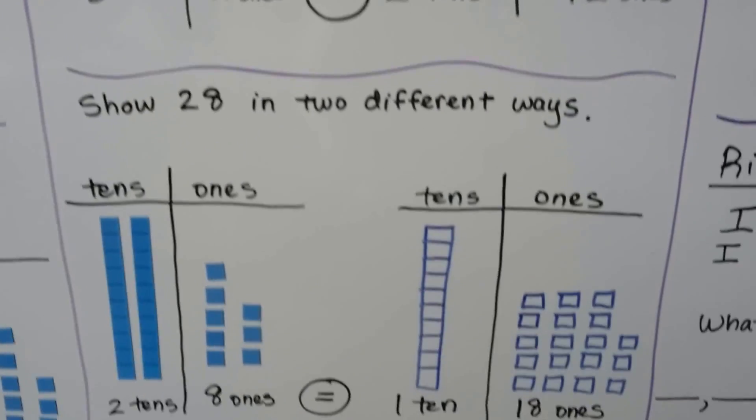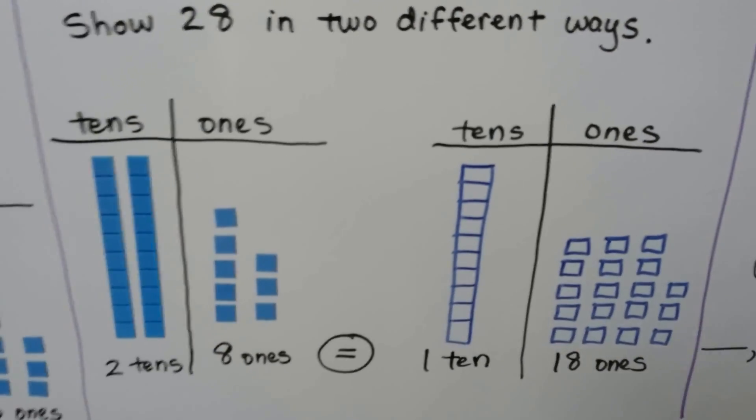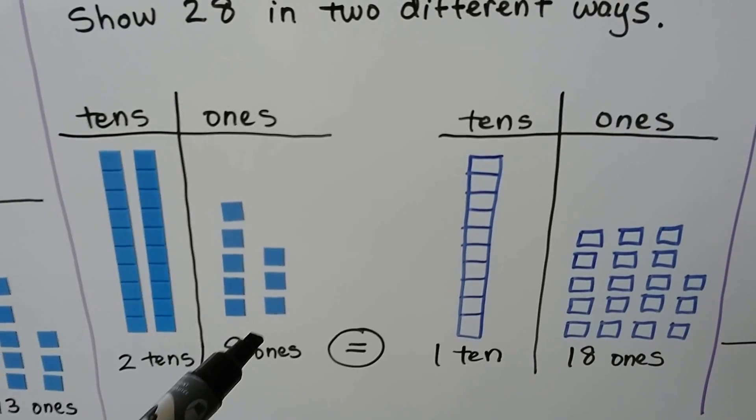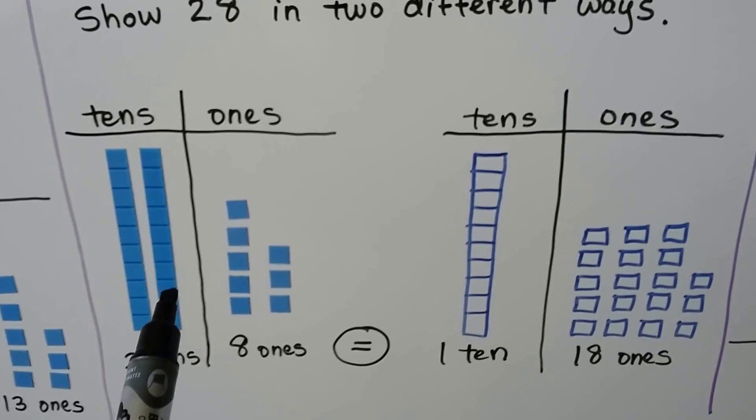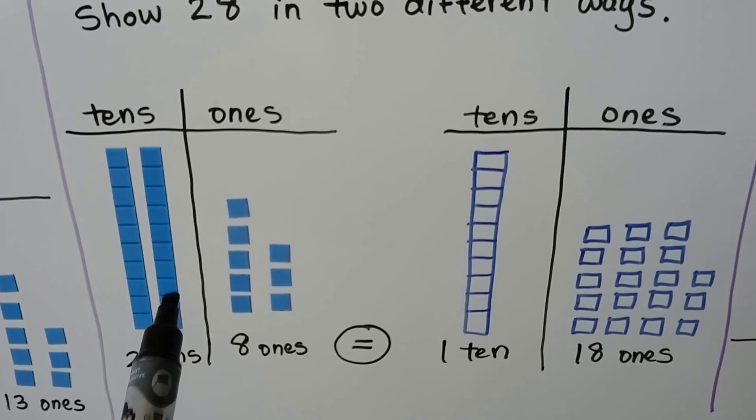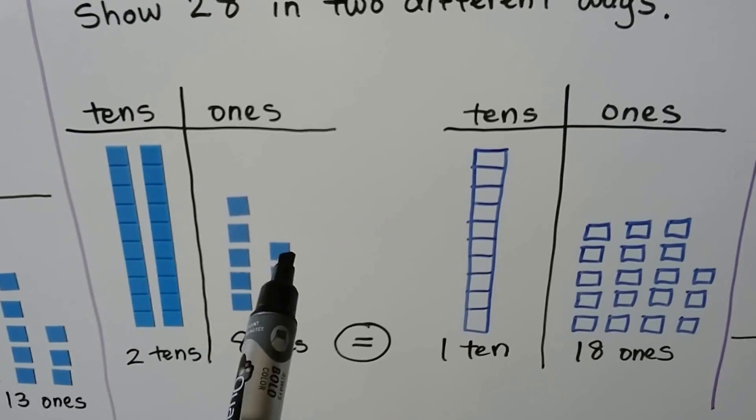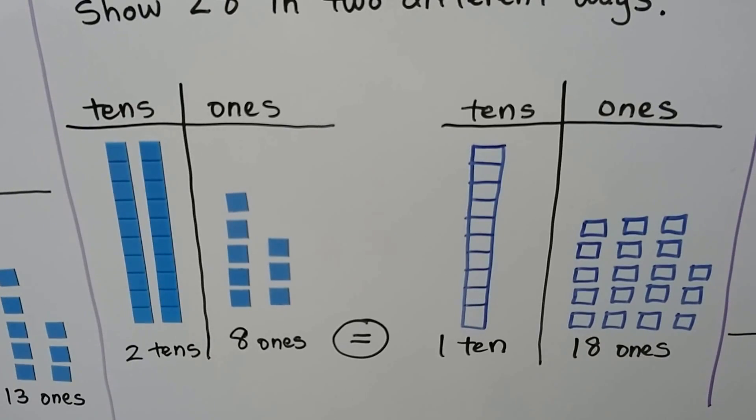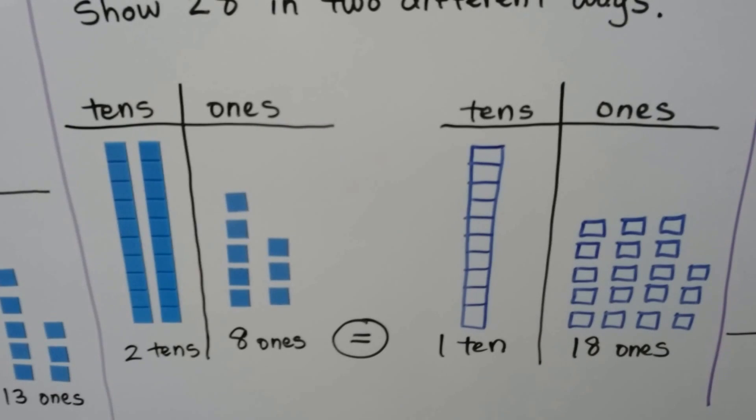We can show 28 in two different ways. We can show it with 2 tens and 8 ones. We can also take this 10 and break it up into 10 ones and put it on the one side. Then we'll have one 10 and 18 ones. We still have 28 units.